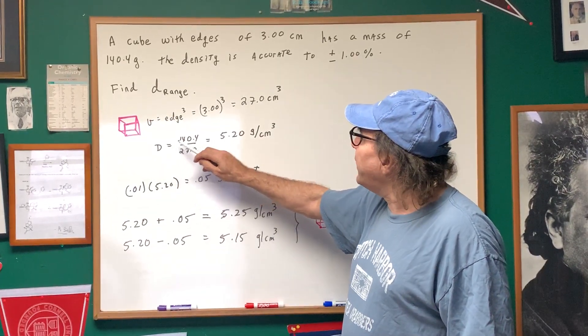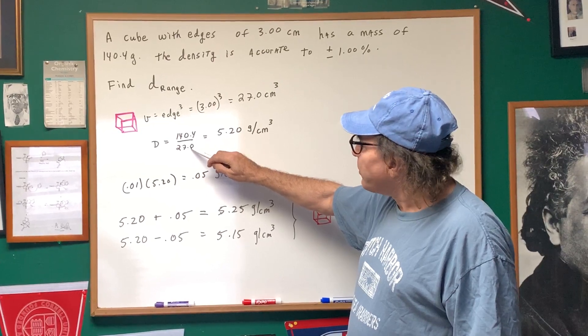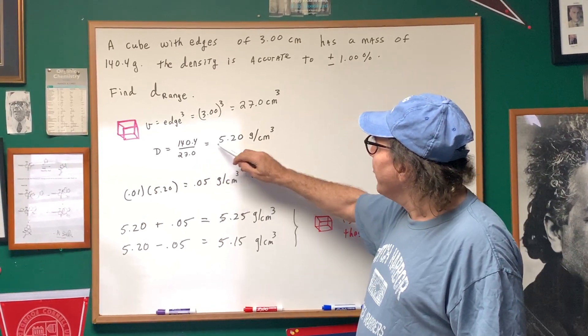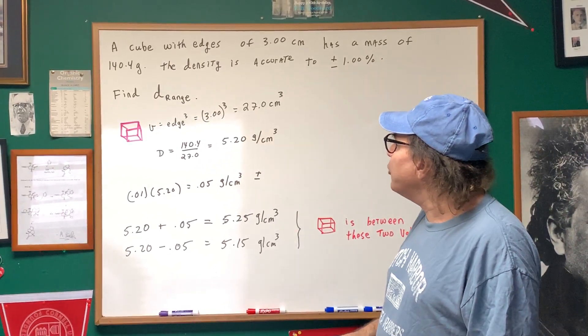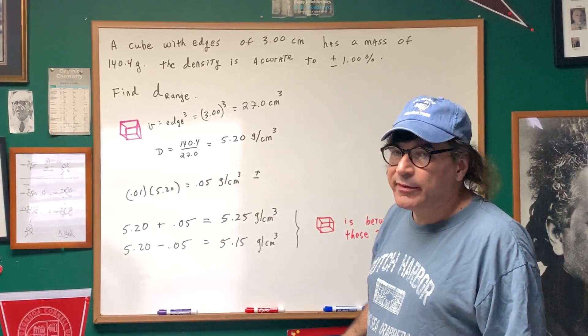Now, we're going to say the density is the mass divided by the volume. We get 5.20 grams per centimeters cubed for the density.